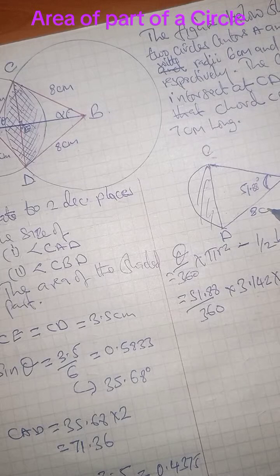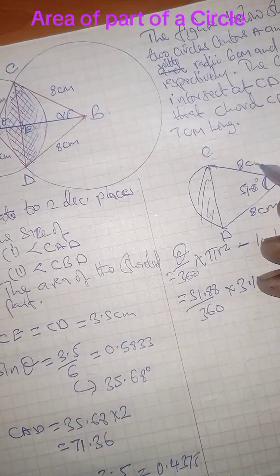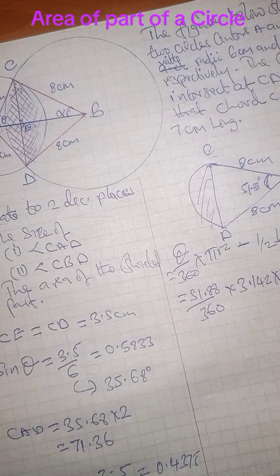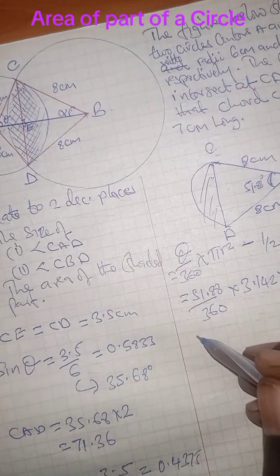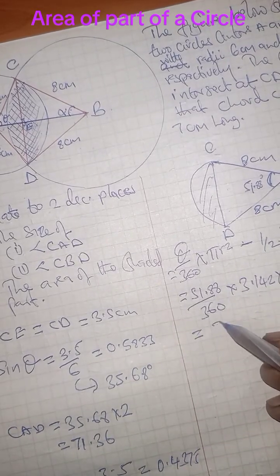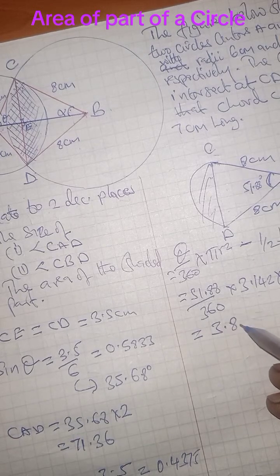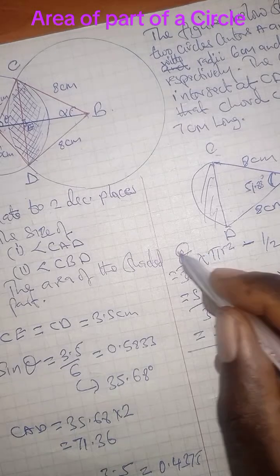Now, this is 8 cm. This should be 8 cm. So pardon me for that mistake. Put all these figures in our calculator. It should be able to give you 3.80 cm squared to two decimal places.